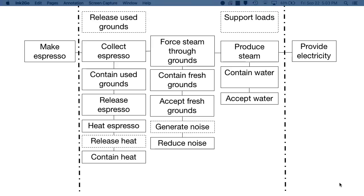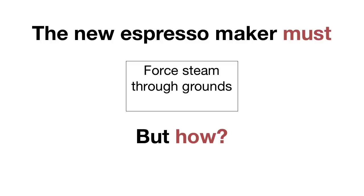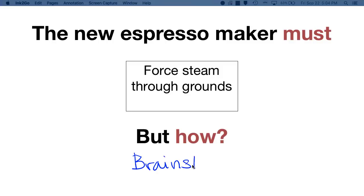So how is this useful to us? We've broken down an espresso maker into very broadly termed functions. Let's take a look at this secondary function — we haven't committed to a means for forcing steam through the coffee grounds. We've only established through the diagram that doing so is essential for collecting the newly made espresso, and that it can be done using the produced steam. So we know the new espresso maker must force steam through coffee grounds, but how? This would be a great place to start brainstorming. We haven't committed to a particular way of forcing steam through the grounds; we just know that it has to occur in the product.